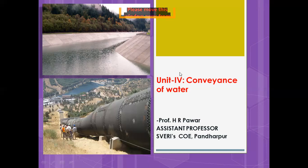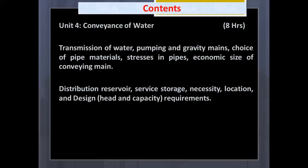Then we will learn in this unit how to find out the economic diameter of the pipe. As per university syllabus we have eight hours weightage for this unit. Points we are going to learn are: transmission of water, pumping and gravity mains, choice of pipe materials, stresses in the pipe, and economic size of the conveying main.